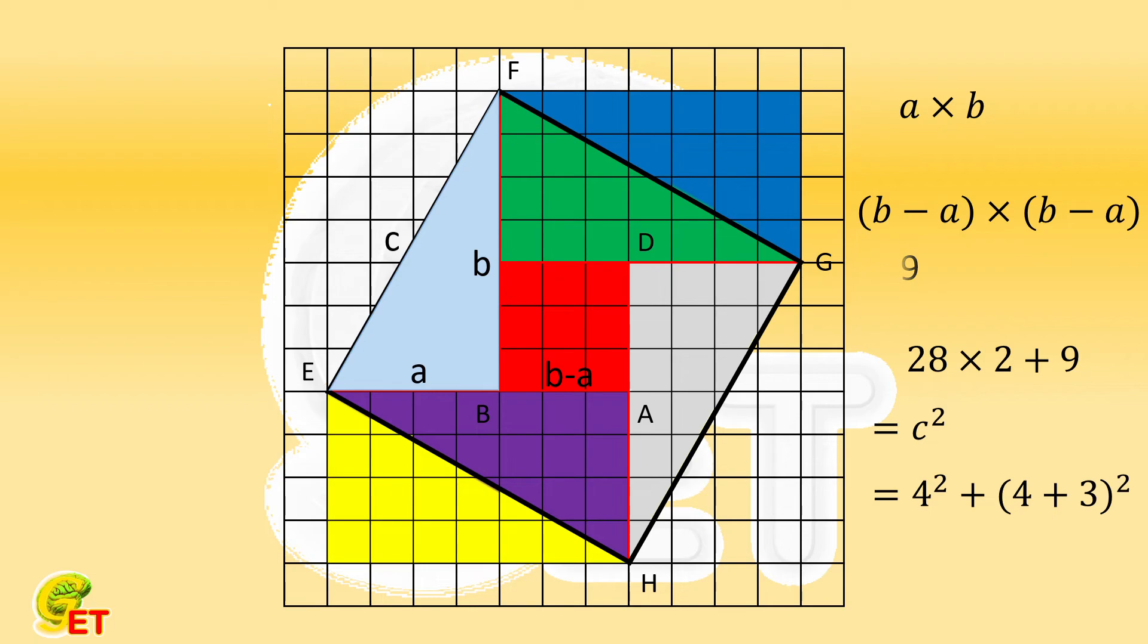And it equals square of A plus square of B minus twice A times B. So the total area is twice AB plus square of A plus square of B minus twice A times B. We remove the opposite terms so as to achieve square of A plus square of B.